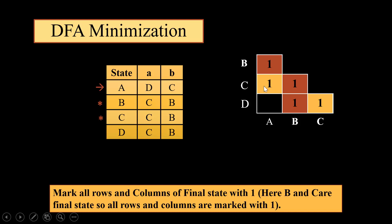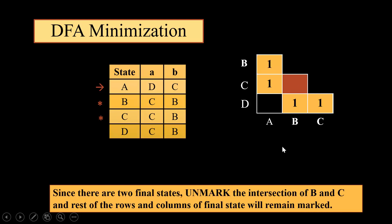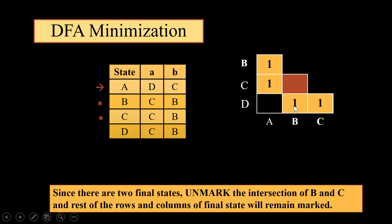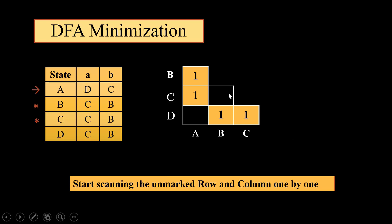Likewise we have C as the final state, so we will mark all the rows and columns of C with one. The most important point when we have more than one final state is that we need to unmark the intersection of both the final states. Here the intersection of both final states is marked with dark orange color, that is BC. So we will unmark BC and rest all the states which were marked corresponding to final states will remain as they are.